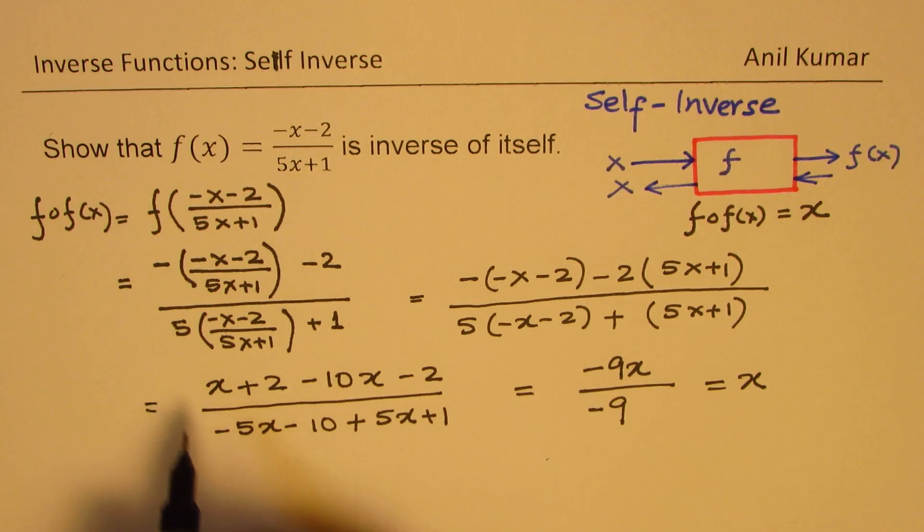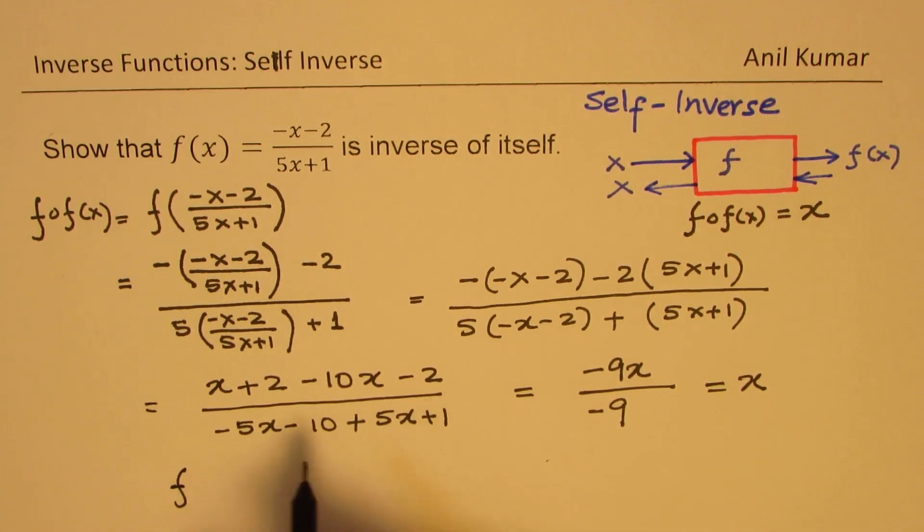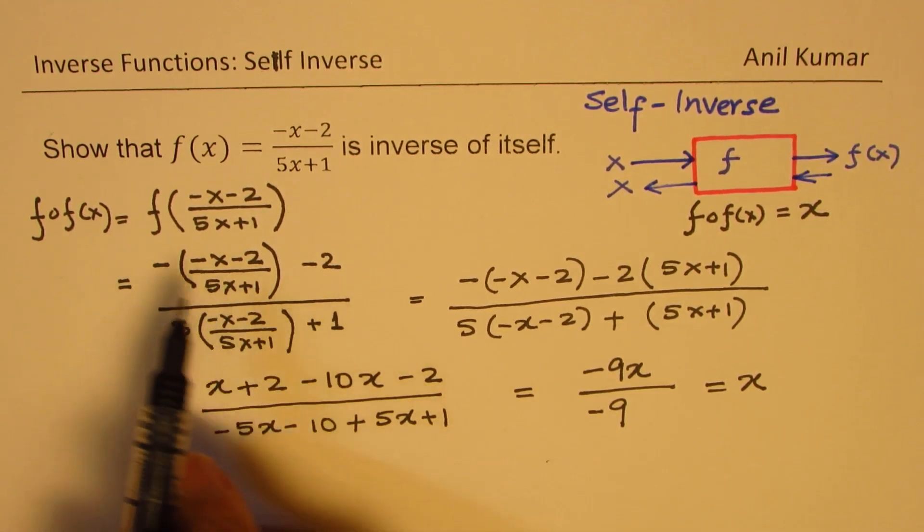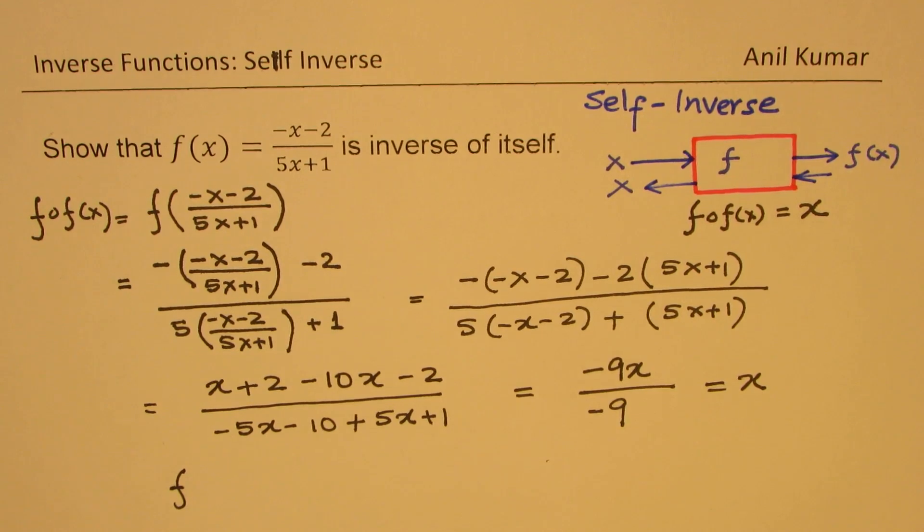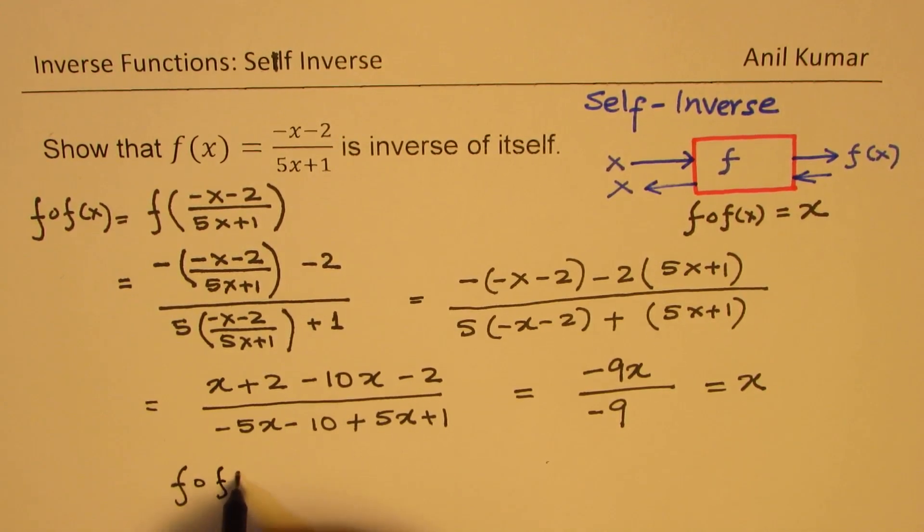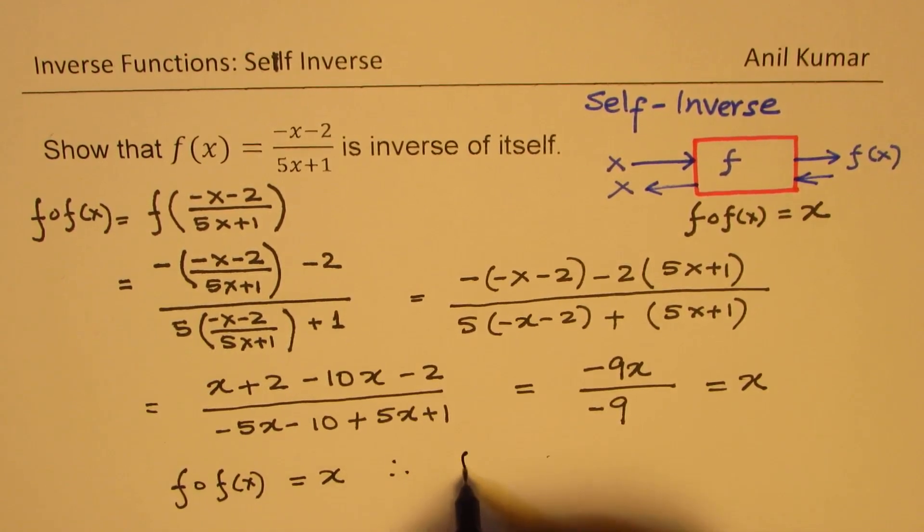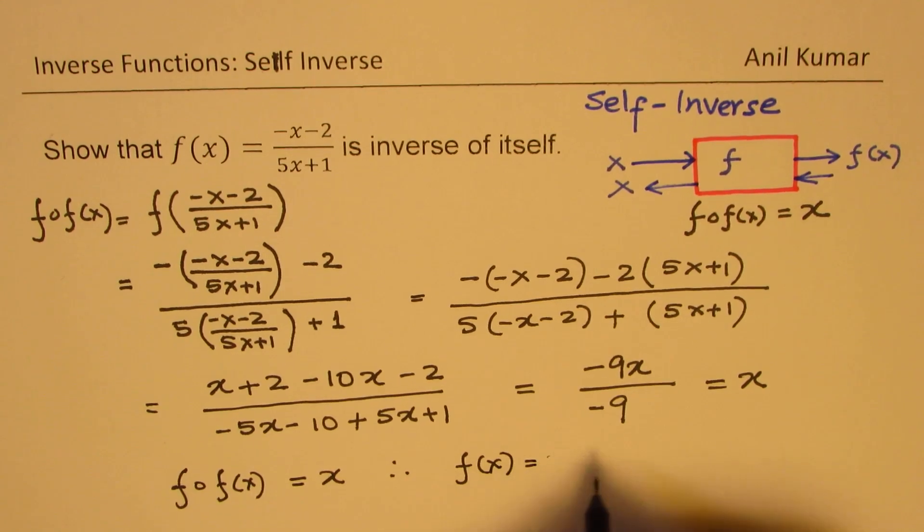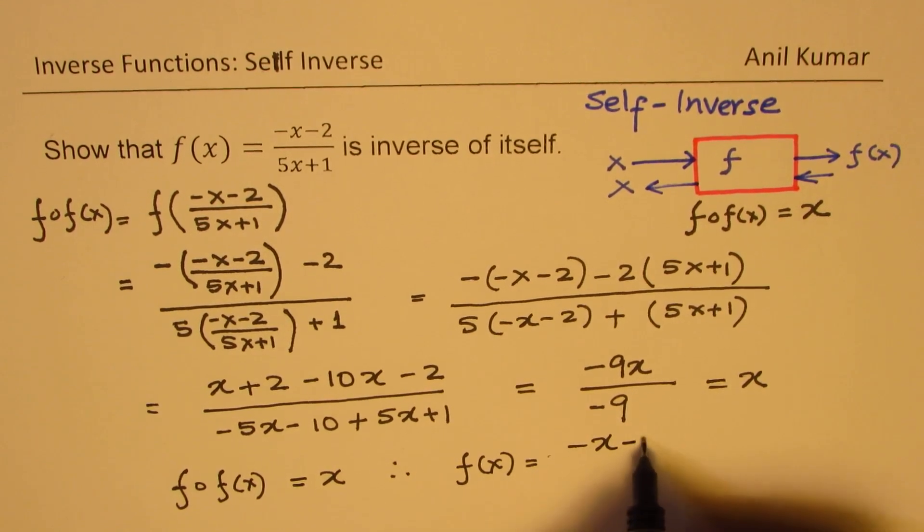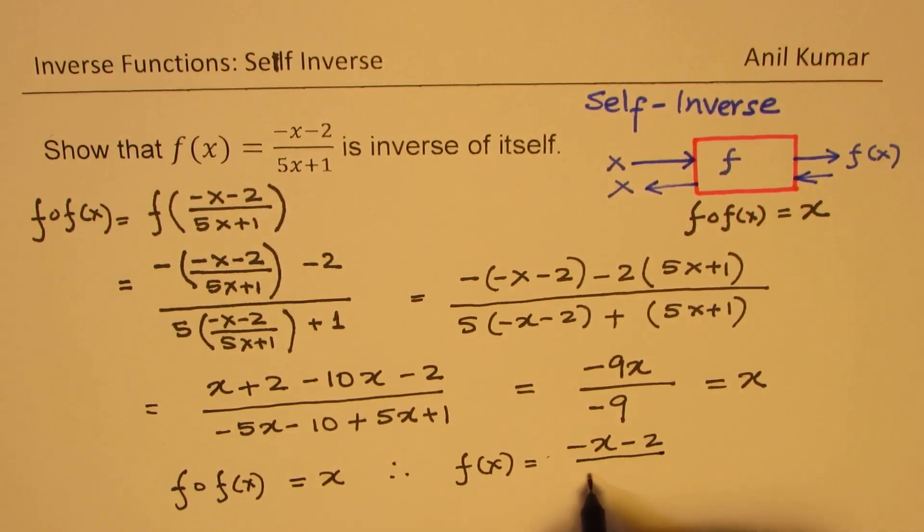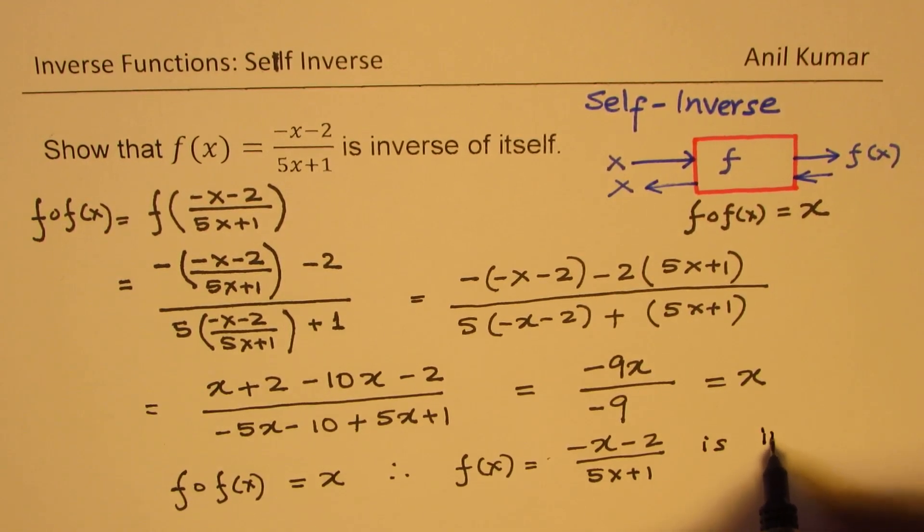So clearly, what we get as a function of function, so when we applied this function on itself second time, so when we got function of function is basically equal to x. And therefore, we can say that f of x equals to minus x minus 2 over 5x plus 1 is inverse of itself.